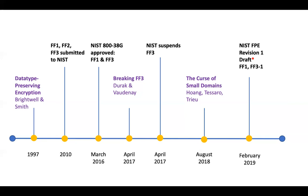Unfortunately, as sometimes happens with encryption standards, very quickly — within about a year — academic researchers Dirac at Rutgers and Vaudenay at the Swiss Federal Institute published a paper showing how you could break FF3 very quickly. NIST suspended FF3 and said you should be really careful with format-preserving encryption. This caused some of the fear, uncertainty, and doubt that exists around it right now.